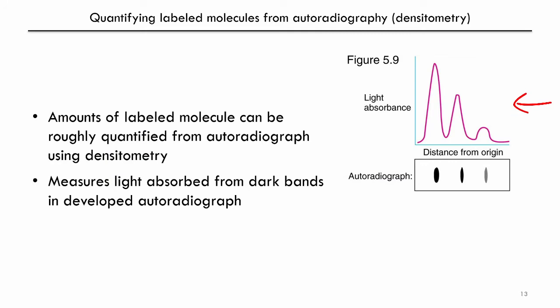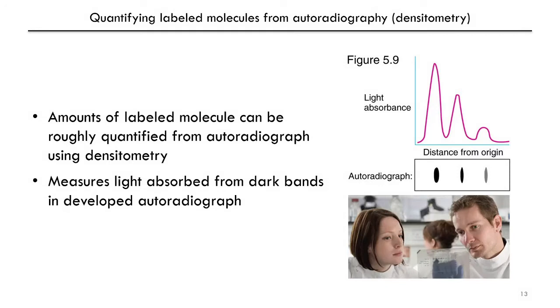A densitometer measures the light that's absorbed in these autoradiographs, and that's a rough way to quantify the amount of a labeled molecule. Pictured here, researchers are comparing the darkness of bands in an autoradiograph of labeled DNA in different experimental conditions to get a sense of the amount of labeled DNA in each condition. Using a densitometer, densitometry can provide a quantitative measure.